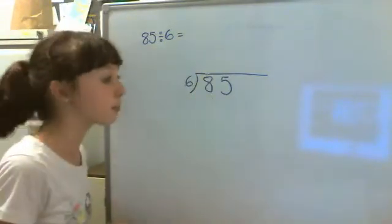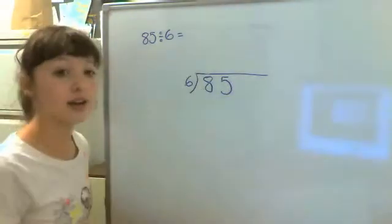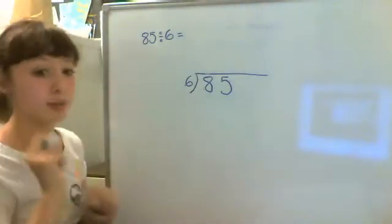Okay, so we've already drawn our bus stop. We've got 855 underneath and 6 there. So it's 855 divided by 6.